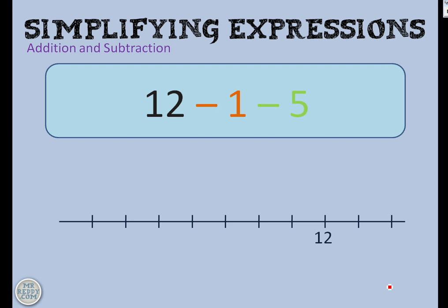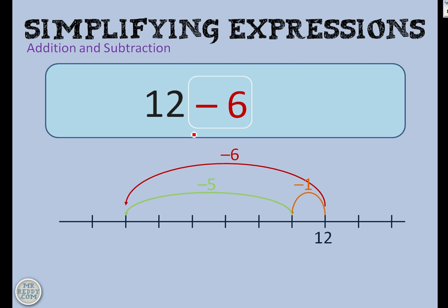This is where people really run into problems. 12 take away 1, take away 5. When I see people trying to simplify this, I get people saying 12 take away 4, or 12 add 6, or 12 take away 3 and all sorts of funny business. But let's look at the number line below — 12 take away 1 first of all and then take away 5. That can only be 12 take away 6 when it's simplified. 12 take away 1 take away 5 is the same as 12 take away 6.